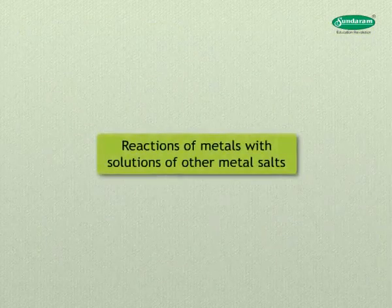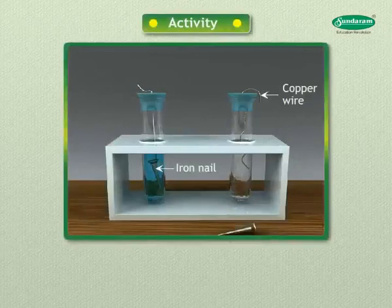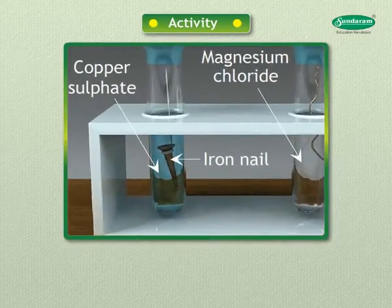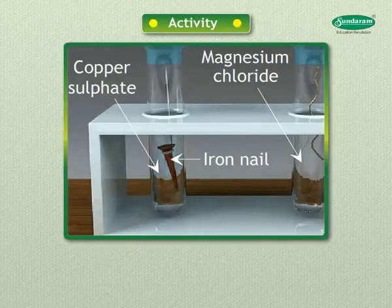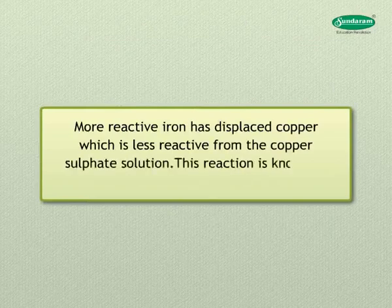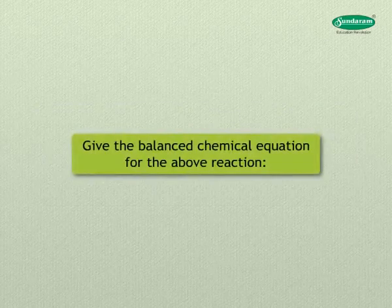Now let us look at the reactions of metals with solutions of other metal salts. Take a clean copper wire and an iron nail. Put the copper wire in a solution of magnesium chloride and the iron nail in a solution of copper sulfate. After some time, the iron nail gets coated with a reddish-brown color of copper, and the blue color of copper sulfate solution fades. The more reactive iron has displaced copper from the copper sulfate solution — this is a displacement reaction.